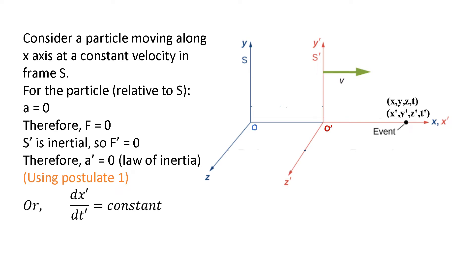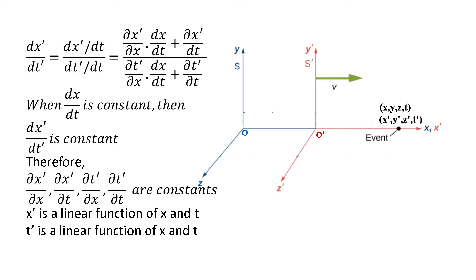We have used the law of inertia in both inertial frames S and S prime. Since the acceleration of the particle in frame S prime is zero, the velocity of the particle in frame S prime is constant — in other words, dx prime by dt prime is a constant. Expanding dx prime by dt prime using partial derivatives with respect to X and T, we find that when dx by dt is constant, dx prime by dt prime is also constant. This is possible only if the partial derivatives are constants, so X prime is a linear function of X and T, and T prime is also a linear function of X and T.